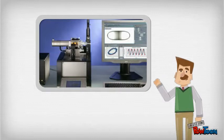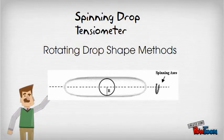The liquid drop will start to deform into an elongated shape. This elongation stops when the interfacial tension and the centrifugal force are balanced. The surface tension between the two liquids can then be derived from the shape of the drop at this equilibrium point.